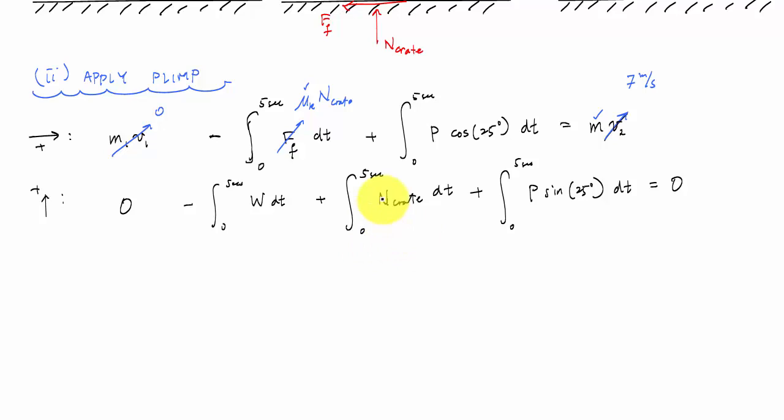I can use the second equation to solve for N crate as a function of P. When I work all this out, I'll get fives, five, five, five, I'll divide through by five. The second equation right here, what I will end up with is negative W plus N crate plus P sine of 25 degrees equals zero. I would get N crate is equal to W minus P sine of 25 degrees.